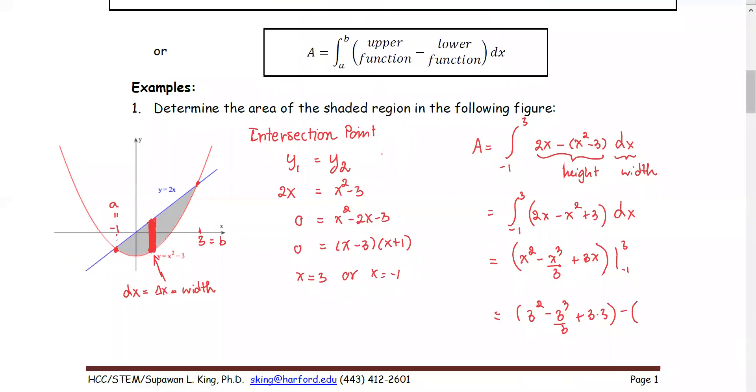Which is negative 1 quantity squared minus negative 1 to the power 3 over 3 plus 3 times negative 1.